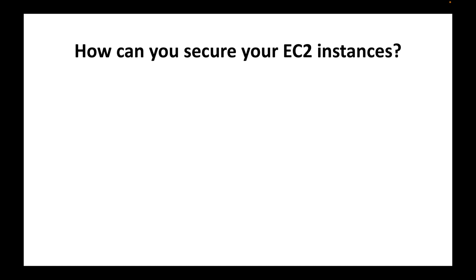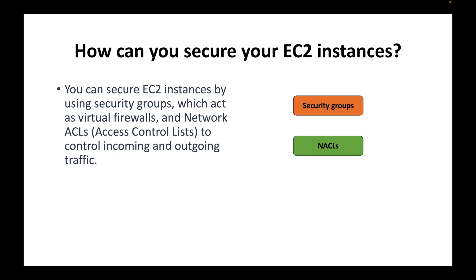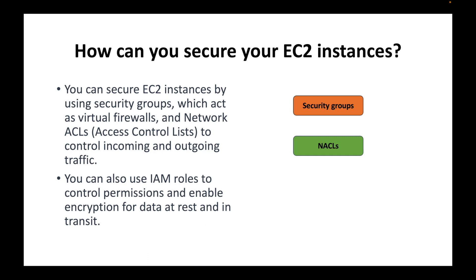The next interview question is: how can you secure your EC2 instances? There are different ways to do this. You can use security groups, which are virtual firewalls to control inbound and outbound traffic. You can also use NACLs — Network Access Control Lists — to control traffic as well. In addition, you can use IAM roles to control permissions for what the EC2 instance can do, and you can enable encryption to encrypt data at rest and in transit.